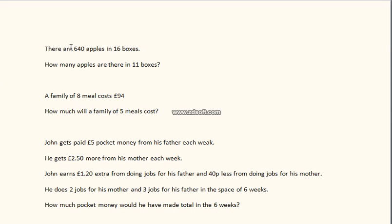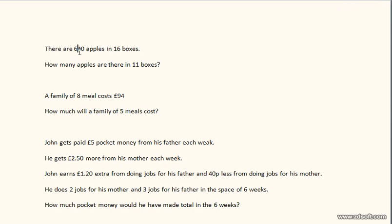So let's halve it. Half of 640: half of 600 is 300, half of 40 is 20, that's 320. Then half of 320: half of 300 is 150, half of 20 is 10, that's 160. Now we halve 160 one more time to get to one box: half of 160 is 80, and half of 80 is 40. So there are 40 apples in one box.